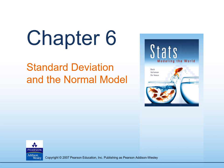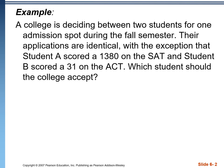Chapter 6: Standard Deviation and the Normal Model. Let's start with an example. A college is deciding between two students for one admission spot during the fall semester. Their applications are identical, except that student A took the SAT and scored a 1380, while student B took the ACT and scored a 31. Which student should the college accept?